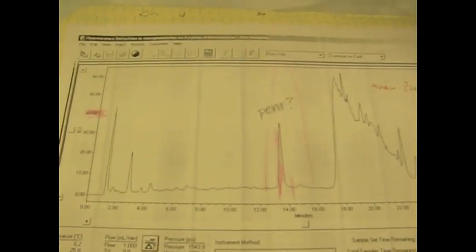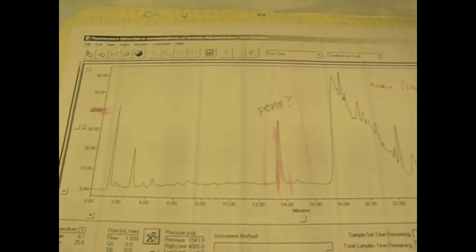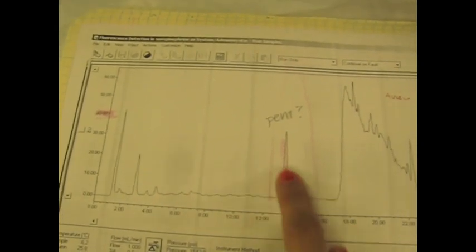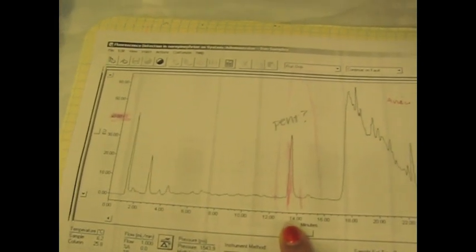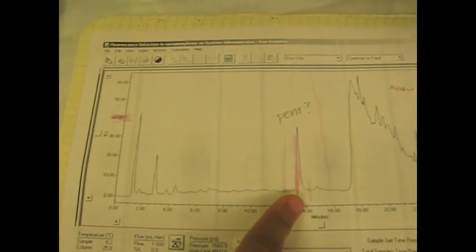The area under the curve represents how much of the compound is in the sample. For example, this peak may either be an impurity or actual pentosity. In order to find out, further investigation is needed and more questions need to be asked. Thank you for coming.